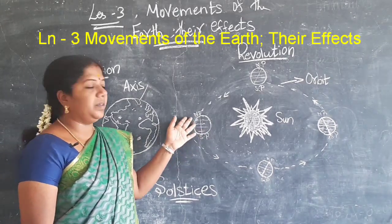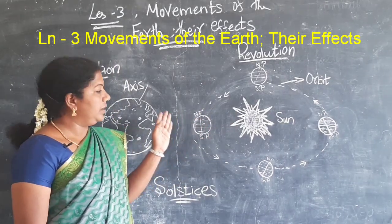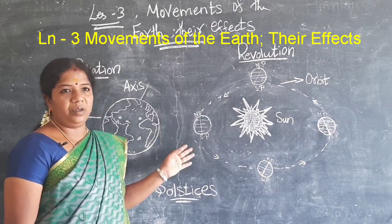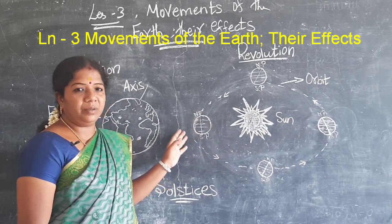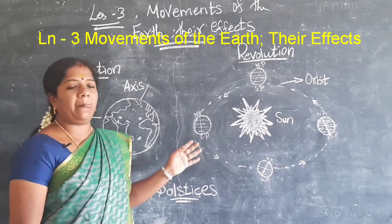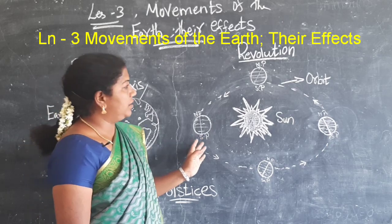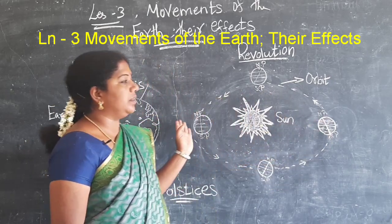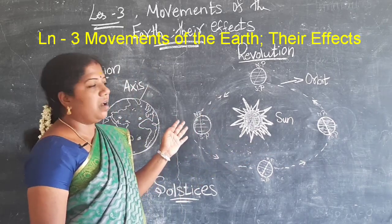If the northern hemisphere faces the sun, it is summer season. If the southern hemisphere faces the sun, it is winter season in the north. The earth travels on its own orbit around the sun, and we call this path the orbit.